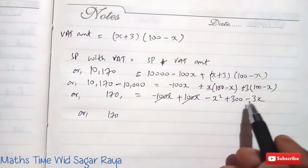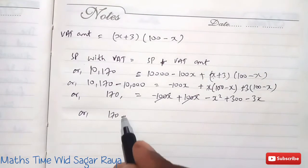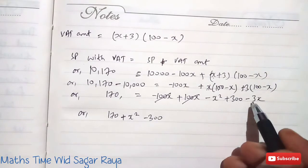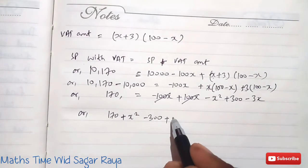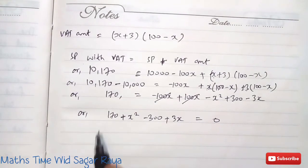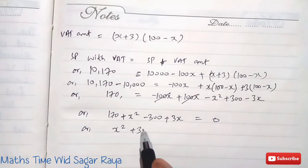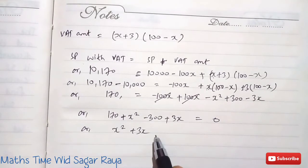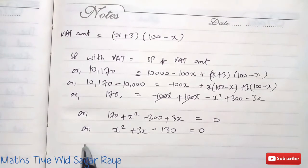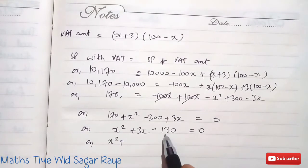Rearranging, bringing all terms to one side: minus X squared becomes X squared, plus 300 becomes minus 300, minus 3X becomes plus 3X, and 170 moves giving minus 130. So the quadratic equation is: X squared plus 3X minus 130 equals zero.